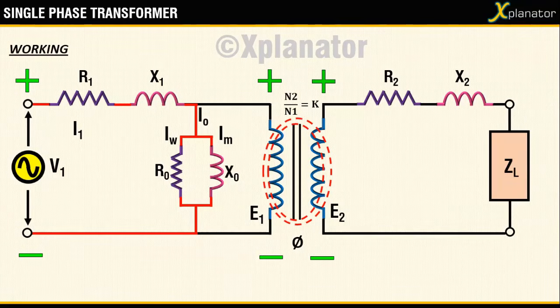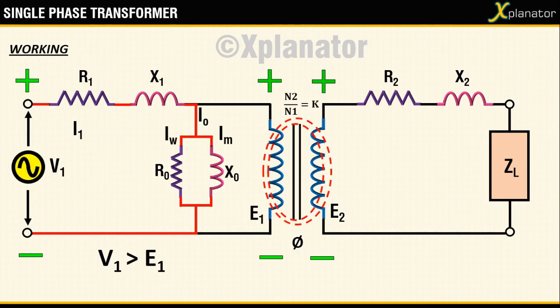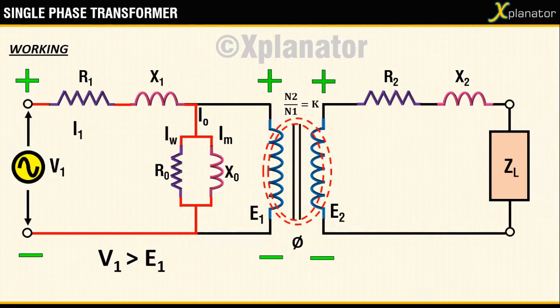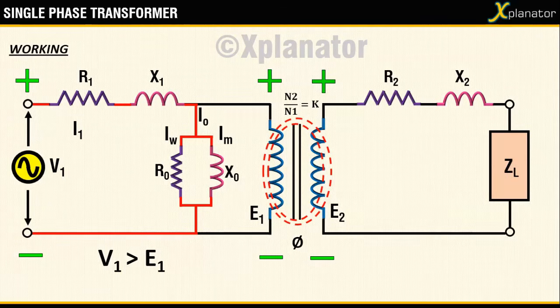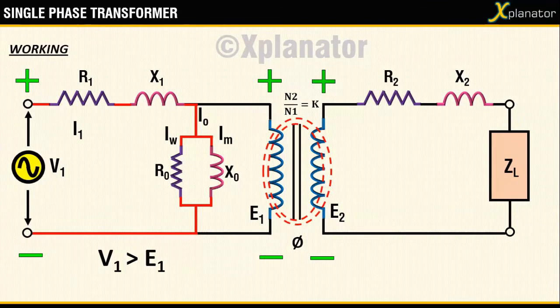Due to presence of R1 and X1, E1 is always lesser than V1. It is because of this that current flowing in the primary winding, that is Im, is minimum. Because E1 is always opposing V1. As long as V1 is greater than E1 current will flow in the circuit.